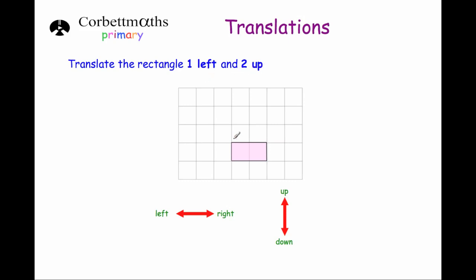What I recommend is that we move each corner at a time. So here we've got this point — I'm going to move it one square left and two up, so it moves to here. Now rather than just drawing the rectangle, I recommend doing another point. Here we've got another point — we move it one square left and two squares up, so it moves to here.